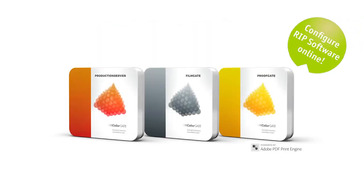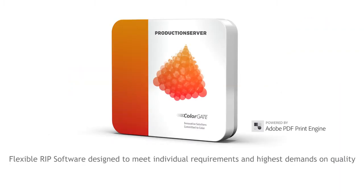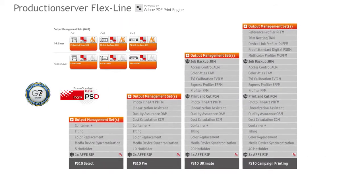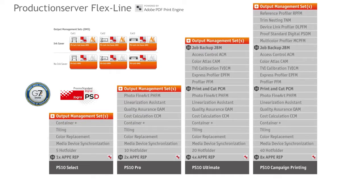Configure your RIP Software solution in five easy steps with our product configurator on our homepage. Production Server is the flexible RIP Software designed to meet individual requirements and demands for highest quality in commercial and industrial printing — the Production Server FlexLine. It provides access to implement highly efficient digital print and proofing workflows by its modular and flexible design. All new or improved modules are marked with a 10.